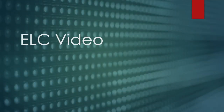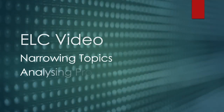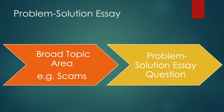Hello students. In this video we're going to be talking about narrowing topics and analysing problems. So remember, in assessment 1 and assessment 2 in this subject you need to write a problem-solution essay. Assessment 1 is the first draft of this essay, and assessment 2 is the final draft. You are given the broad topic area — it might be something like food safety or scams — and you need to narrow this topic down into a problem-solution essay question.